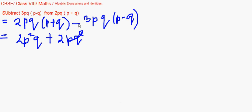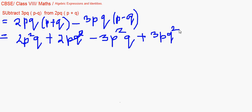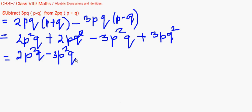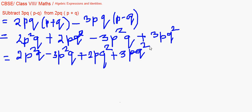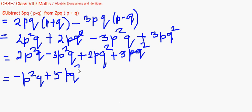Then minus 3pq with p gives me minus 3p²q. Minus 3pq with minus q gives us plus 3pq². Now we collect the like terms together: 2p²q minus 3p²q gives minus p²q, because 2 minus 3 is minus 1, and 2pq² plus 3pq² gives plus 5pq². So the answer is minus p²q plus 5pq².